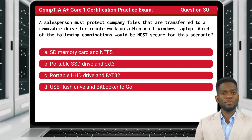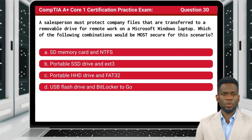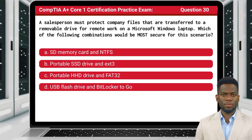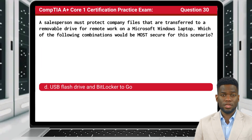Question 30. A salesperson must protect company files that are transferred to a removable drive for remote work on a Microsoft Windows laptop. Which of the following combinations would be most secure for this scenario? The answer is D: USB flash drive and BitLocker To Go.